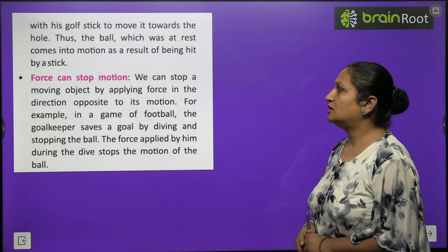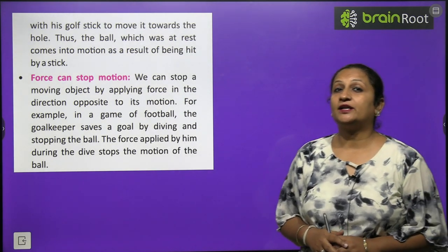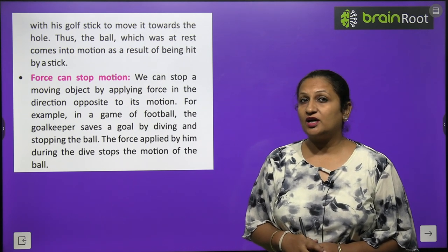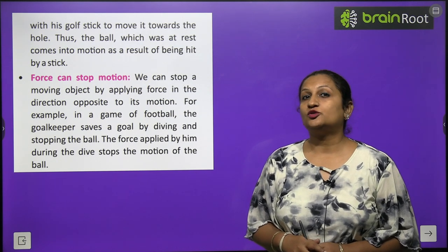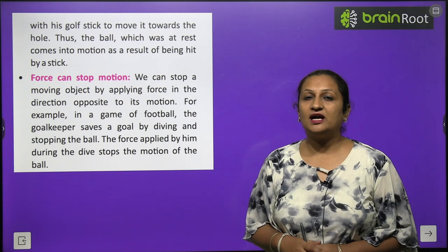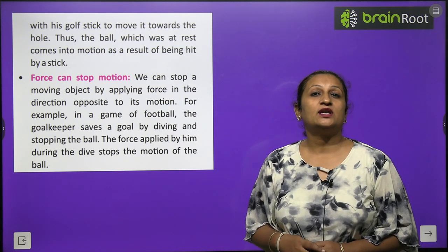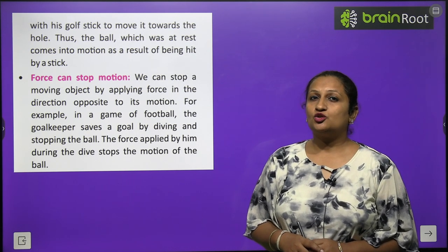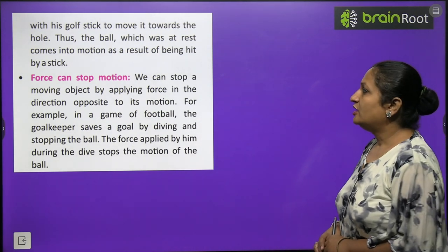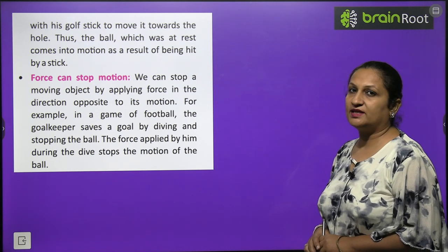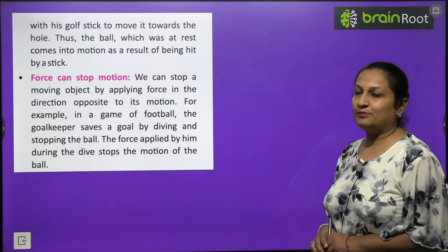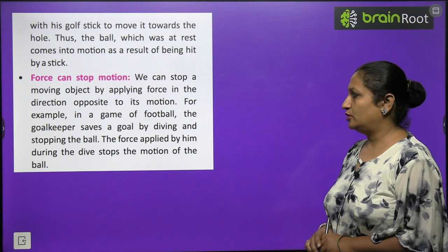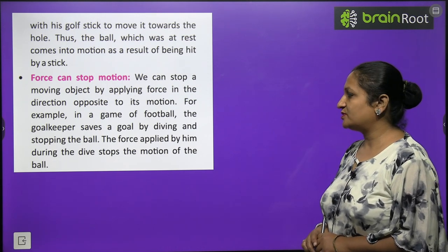Force can also stop motion. If something is moving — for example, in cricket, when a player hits the ball with the bat and another player catches it — the ball was in motion and it stopped. By applying force, we brought a moving object to rest, making it stationary. We can stop a moving object by applying force in the direction opposite to its motion. For example, in football, the goalkeeper saves a goal by diving and stopping the ball.